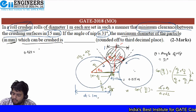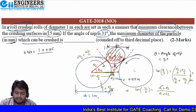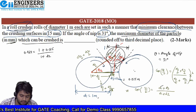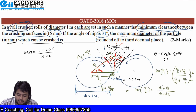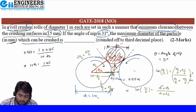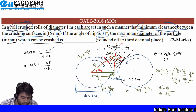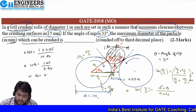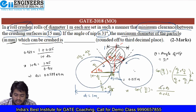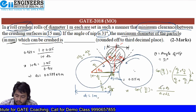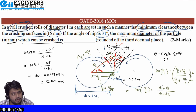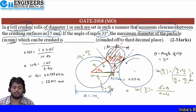Substituting: 0.964 = (1 + 0.015) / (1 + D2), giving 1 + D2 = 1.015 / 0.964. Hence D2 = 0.052904 m. Since the answer is asked in mm, D2 = 52.904 mm. This is the maximum diameter of the particle which can be crushed in the roll crusher.